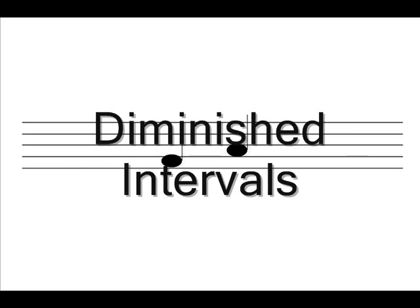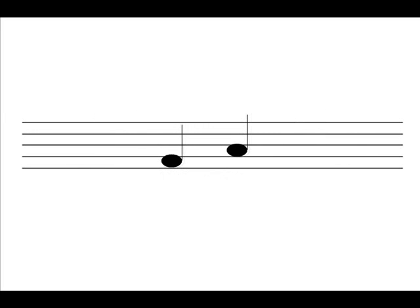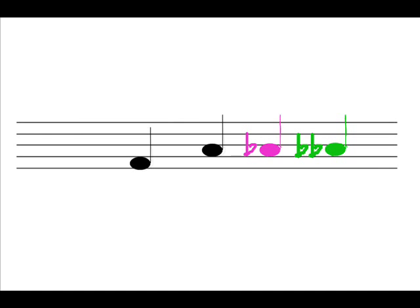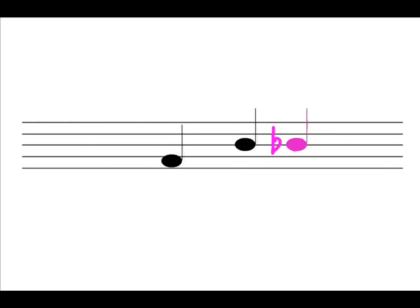Diminished intervals are when a perfect or minor interval is decreased by half a step. Sometimes you may have to use a double flat if the top note is already flat. This is an example of a perfect 4th. To make this perfect 4th a diminished 4th, you must take the top note, B, and decrease it by half a step, which then makes the B a B-flat. You now have a diminished 4th, which is made up of F to B-flat.